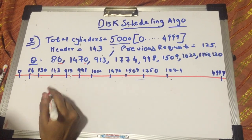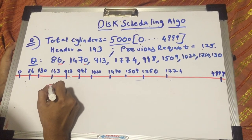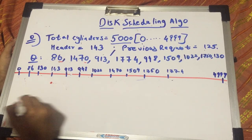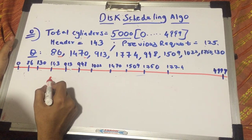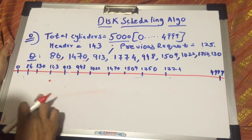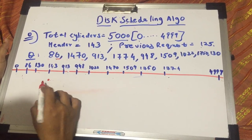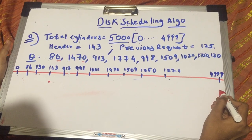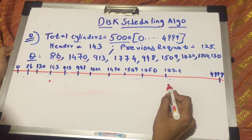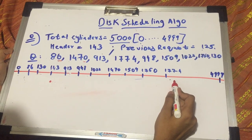What changes we make is that the header is at 143 and we know our direction was this way. So now what we do is that instead of going till 4999, we just go to the highest request that is to be served, that is in this case 1774.